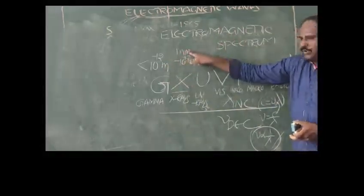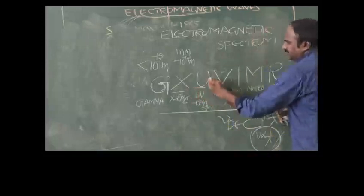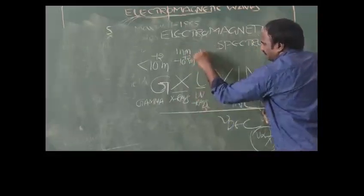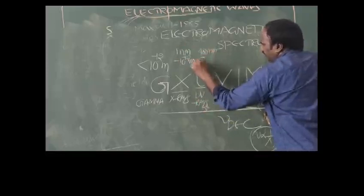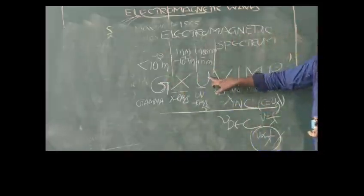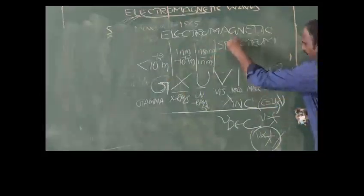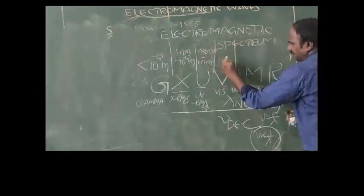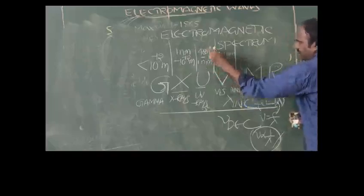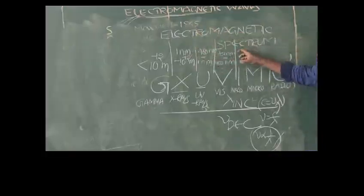For X-rays, wavelength is 1 nm to 10⁻¹² m. For ultraviolet, wavelength is 400 nm to 1 nm. For visible light, wavelength is 700 nm to 400 nm. In such a way, the first value of each range becomes the last boundary of the next range, making it easy to remember each radiation's wavelength.